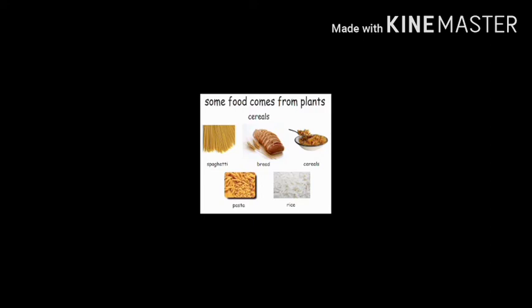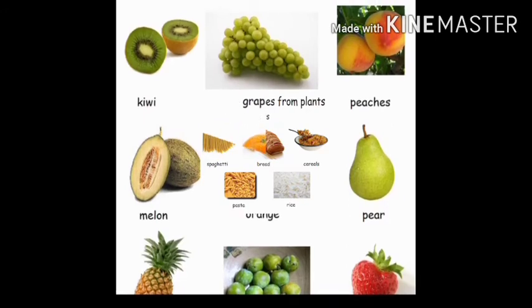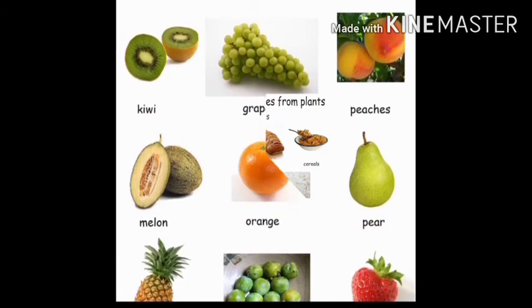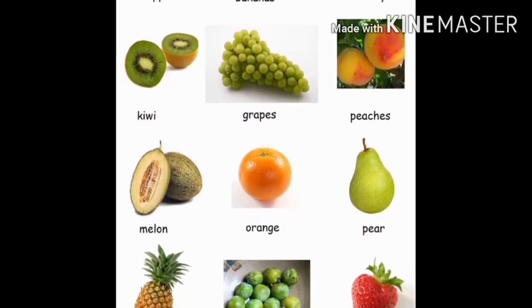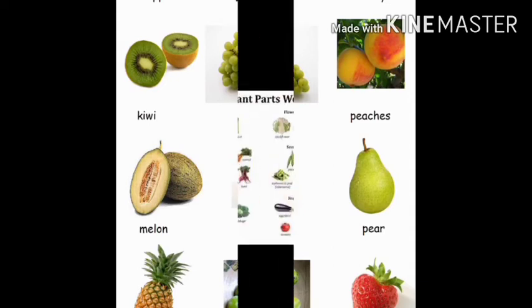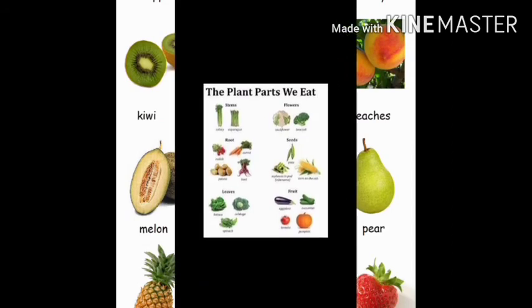Animal products like honey, milk and milk products, meat, eggs, and seafood are all products which we obtain from animals.